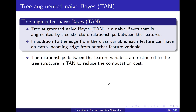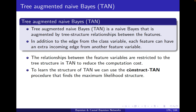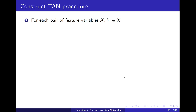If we restrict to tree structures, it will reduce the computation cost. We can use the so-called construct-TAN procedure that finds the maximum likelihood structure. Based on what we have learned, it is basically learning a tree structure for the features. Here is the procedure.